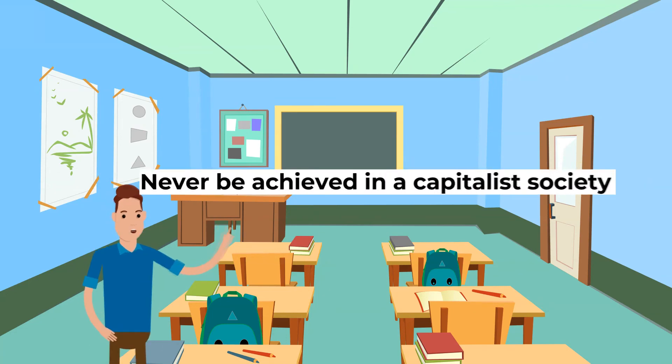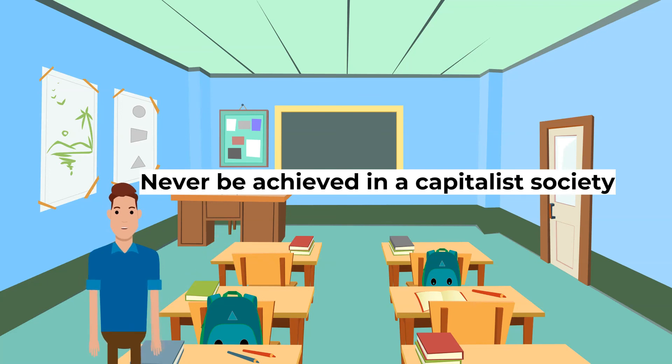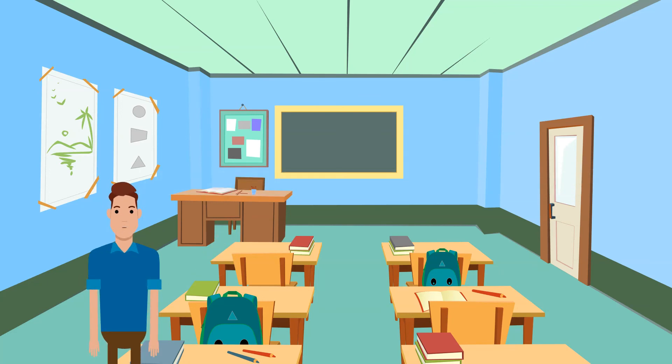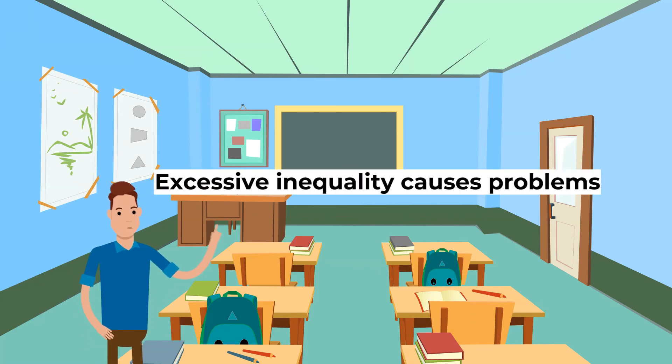It is argued that equality can never be achieved in a capitalist society where the possibility of having more is important to encourage hard work. Without the incentive to gain more, people will not try hard or take risks since they have no reason to and this means the economy won't grow. Inequality is essential for capitalism to work. A degree of inequality is necessary and desirable, but excessive inequality causes problems with efficiency and social justice.